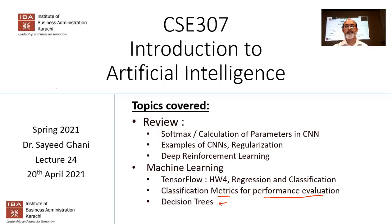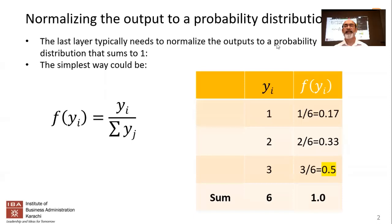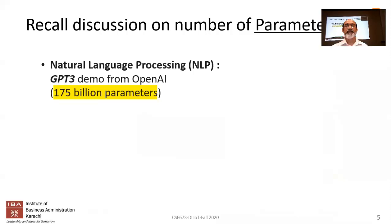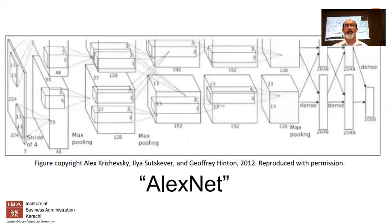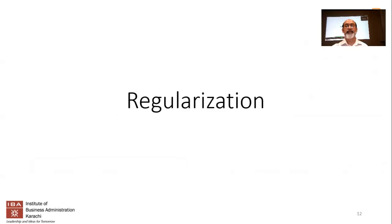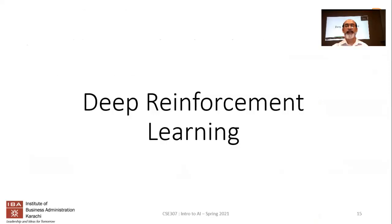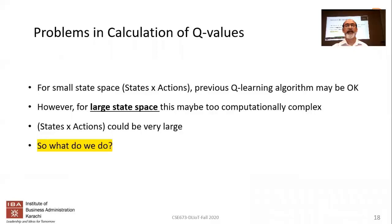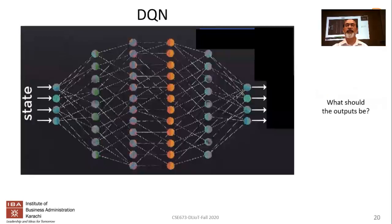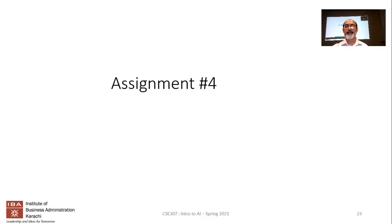These were some of the topics covered in the last lecture: the normalization example using softmax, how to calculate the number of parameters in CNNs, different CNN examples and large-scale competition projects such as AlexNet. We also looked at regularization, early stopping, and dropout. Then we covered deep reinforcement learning, Q values, deep Q networks, and how DRL can now use neural networks.